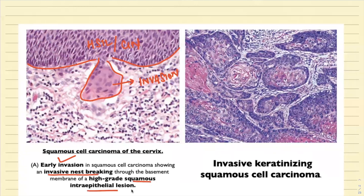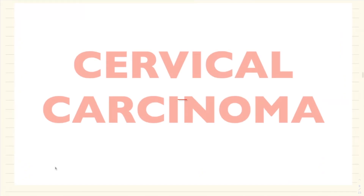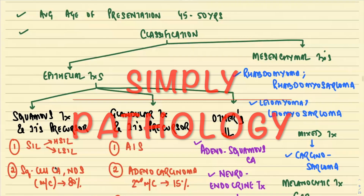This is your invasive keratinizing squamous cell carcinoma. You can see these are all nests of malignant squamous epithelial cells showing the characteristic feature called the squamous pearl — keratinization is present. So it is called invasive keratinizing squamous cell carcinoma.